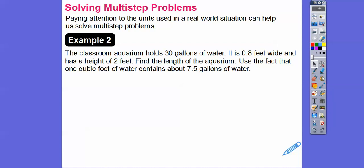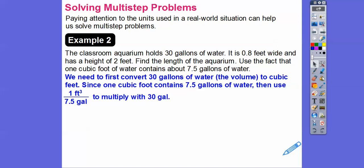So notice this is in gallons right here - volume is in terms of gallons. So I'm going to use the conversion: 1 cubic foot is 7.5 gallons of water. So we need to first convert those 30 gallons to cubic feet. Since 1 cubic foot contains 7.5 gallons of water, then this is equal to 1. So 1 cubic foot to 7.5 gallons of water - these are equal to each other.